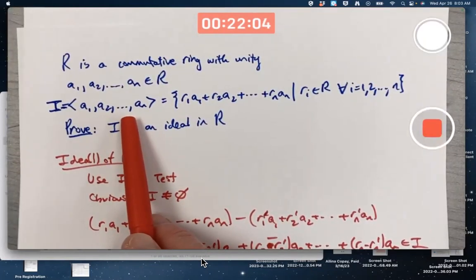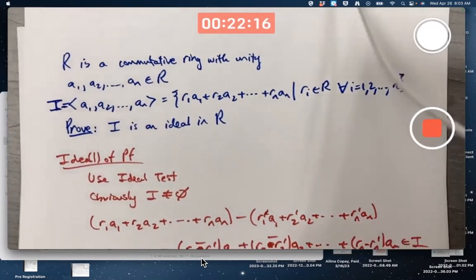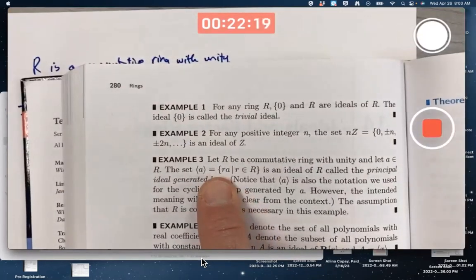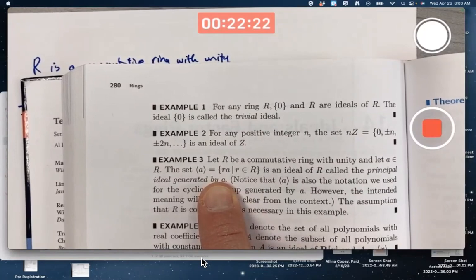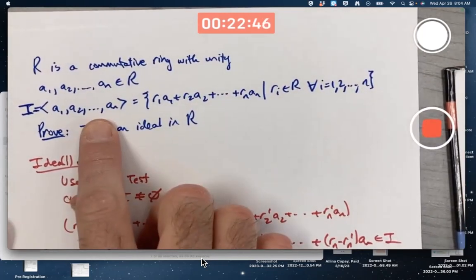If you've got more than one A here, it's no longer what we call the principal ideal, seemingly. Right? What is a principal ideal? Recall that a principal ideal is generated by just one element, one generator, so to speak. In group and ring theory, we use the word generator. In vector space theory, we use the word basis or spanning set, if we're not talking about linear independence. So it seemingly is not a principal ideal, because we've got more than one element if n is greater than one here.